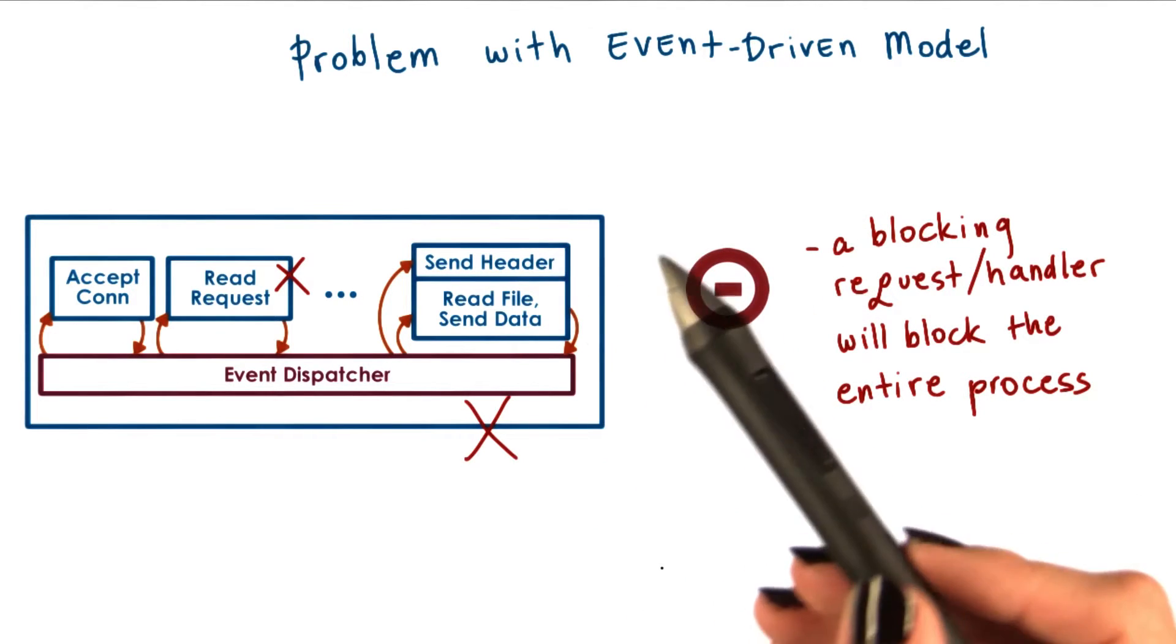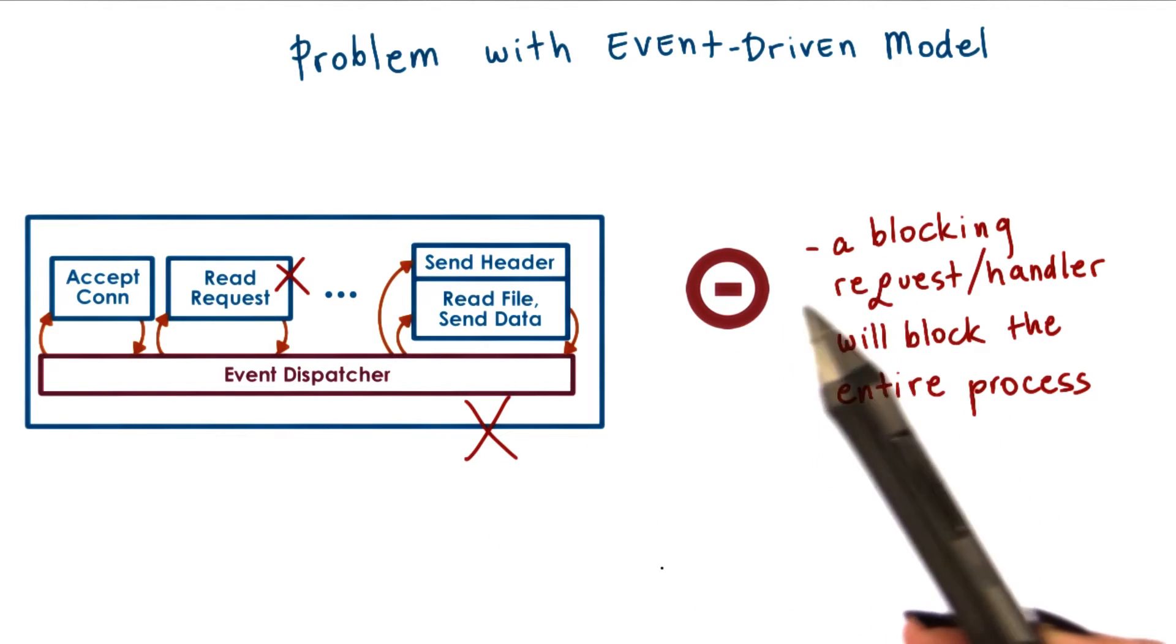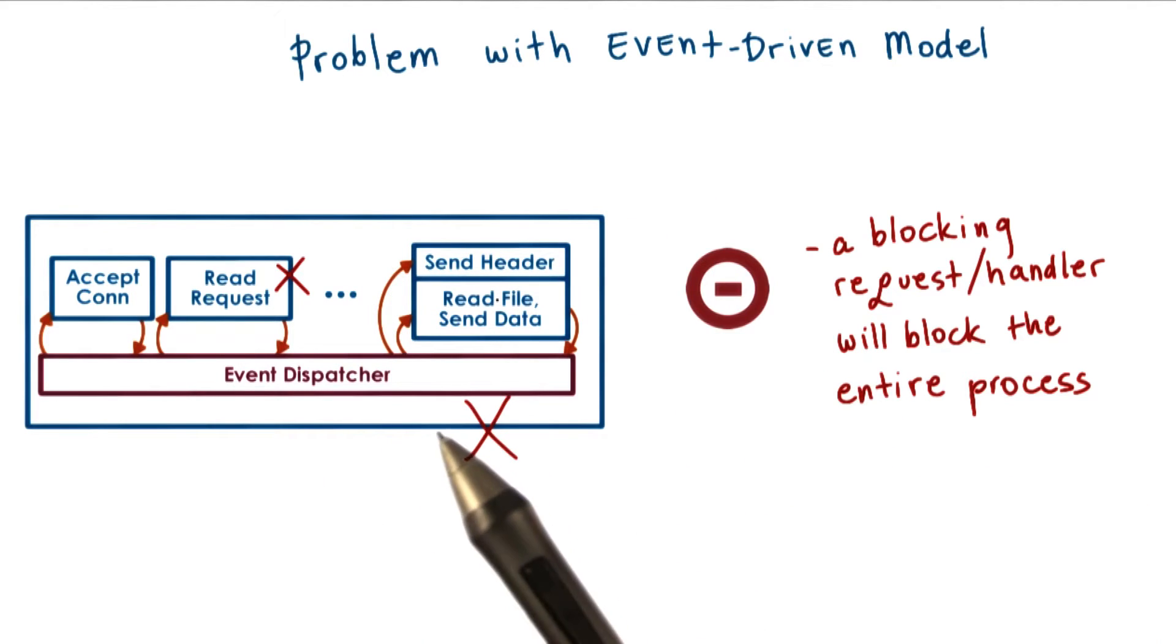A similar problem can occur here as well. If one of the handlers issues a blocking IO call to read data from the network or from disk, the entire event-driven process can be blocked.